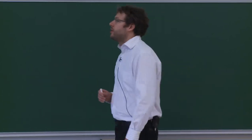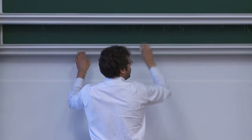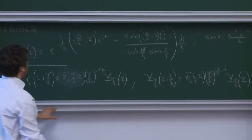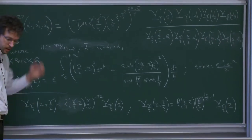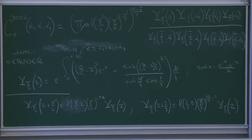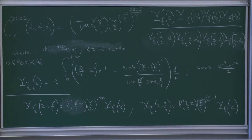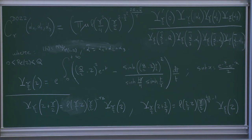Let me recall what the DOZZ formula is. What we did is we introduced in the first lecture a probabilistic expression using the Gaussian free field for the endpoint correlation functions of Liouville conformal field theory. What we're trying to do is prove that the three-point correlation function of Liouville conformal field theory is given by the DOZZ formula — that our probabilistic construction matches this formula that physicists derived in a non-rigorous way.